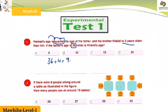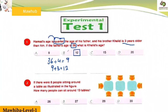It's nine, right? So now, the other sentence says his brother Khalid is three years older than Hamad. So we add three years here: nine plus three equals 12. So Khalid's age is 12. Do you understand, my student? Yes.